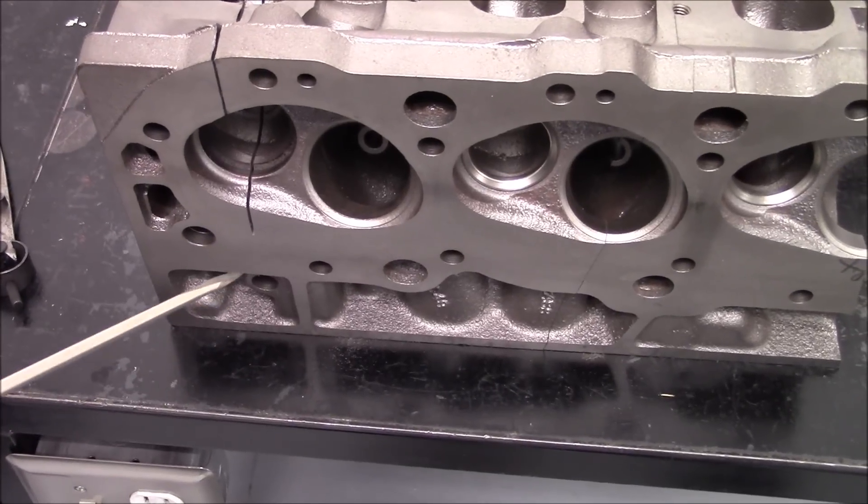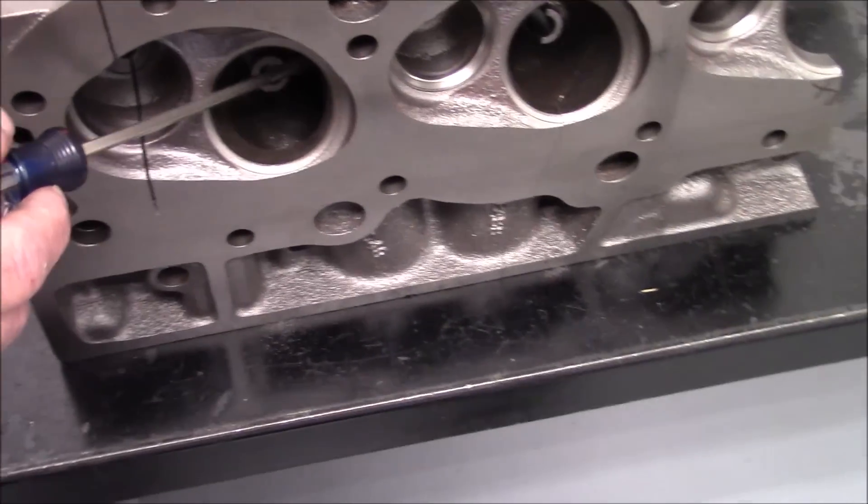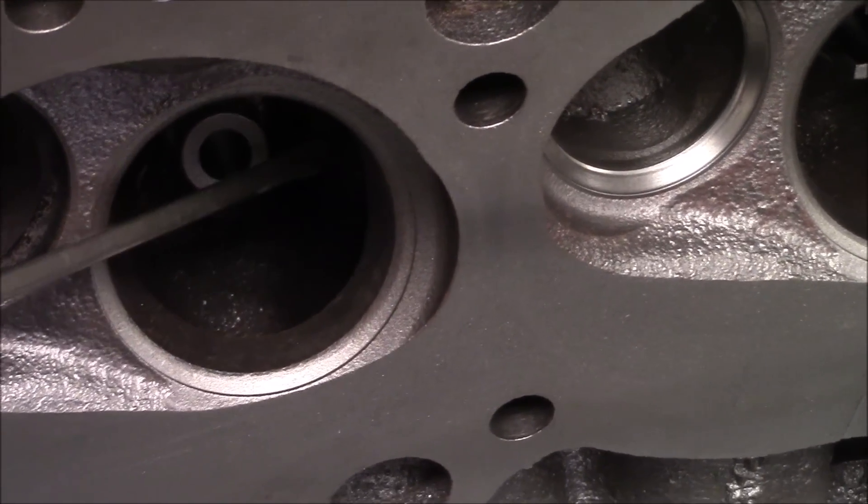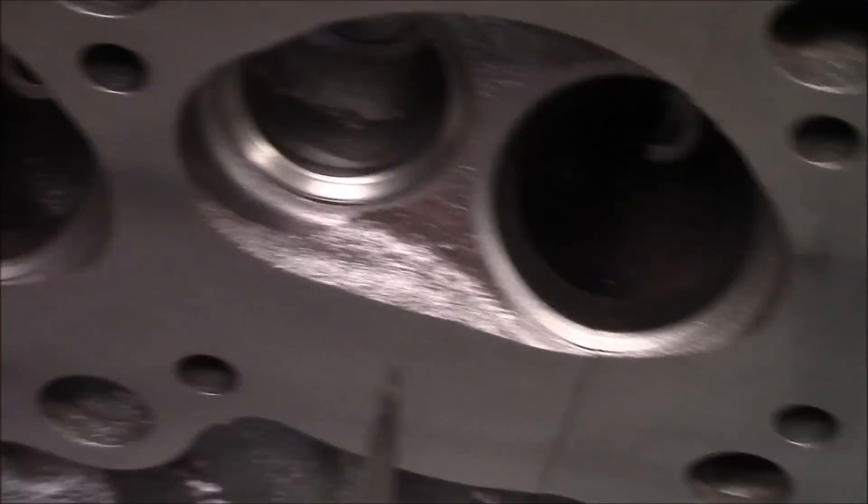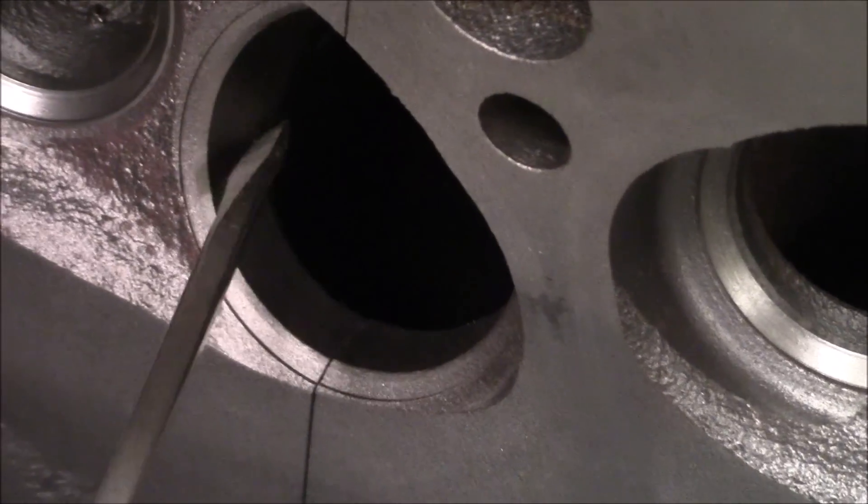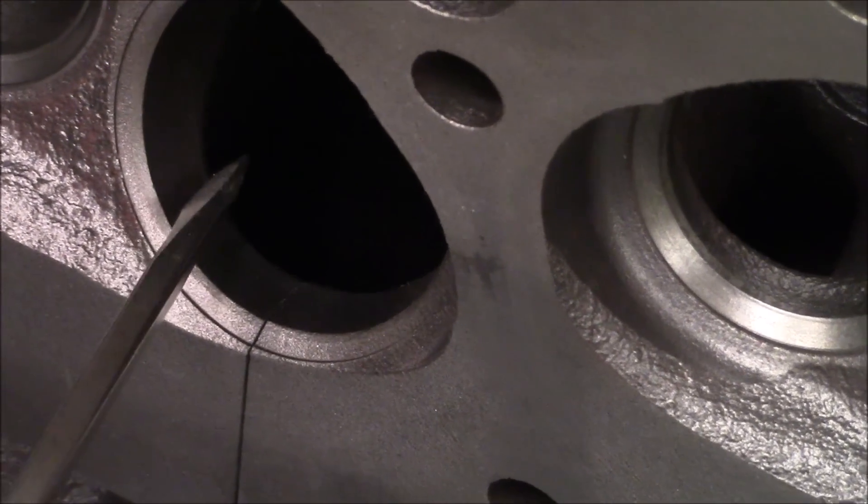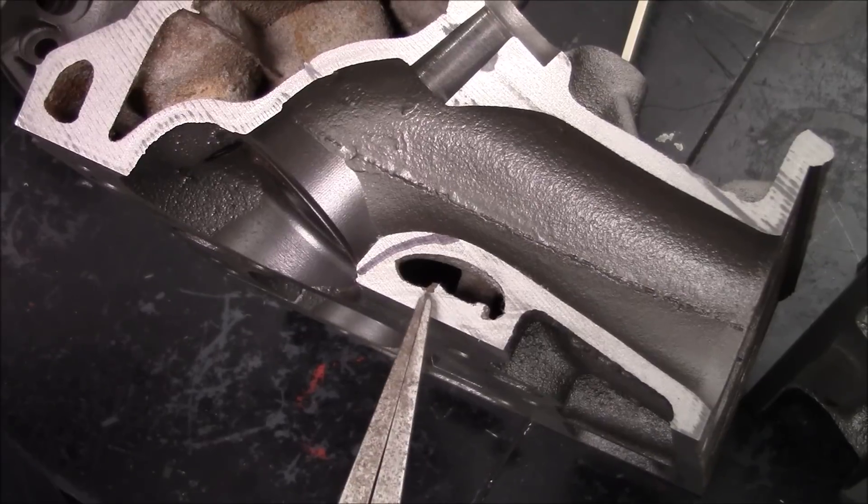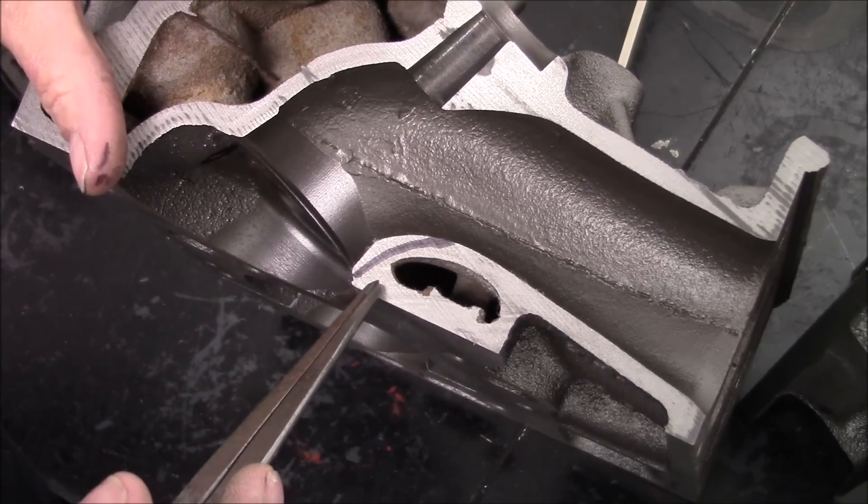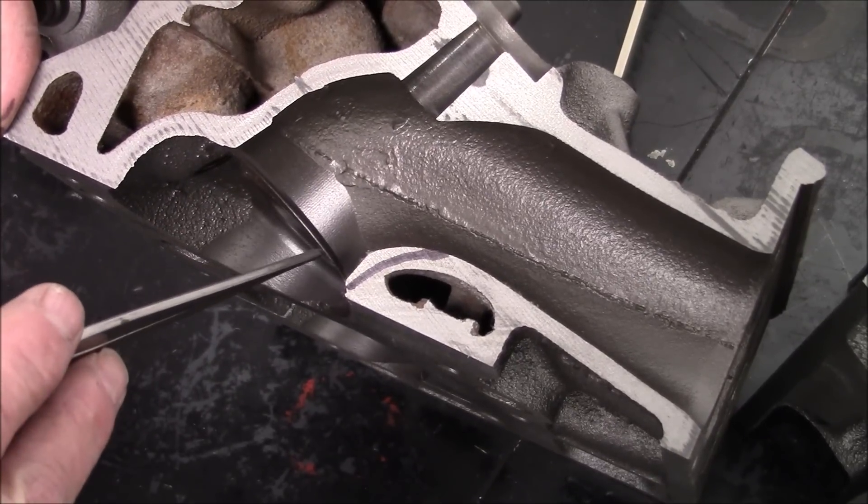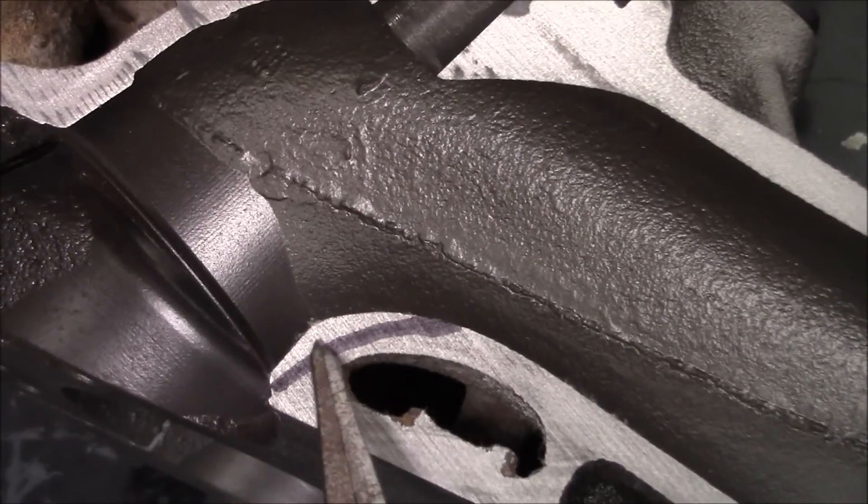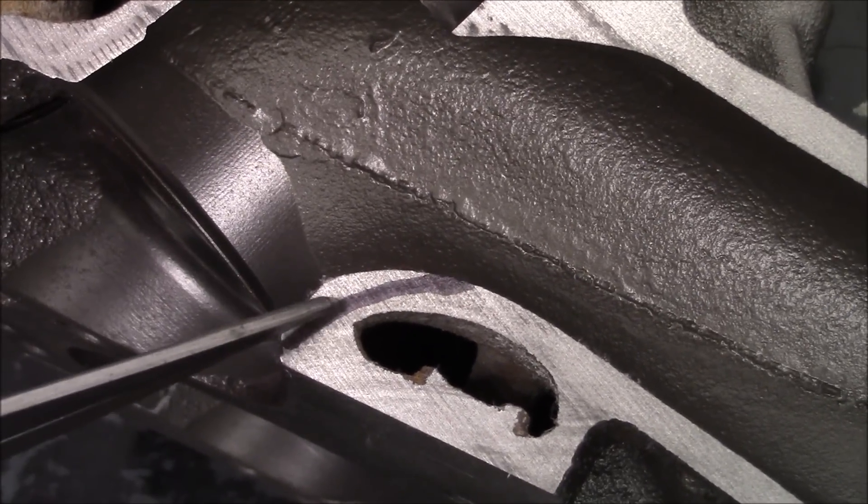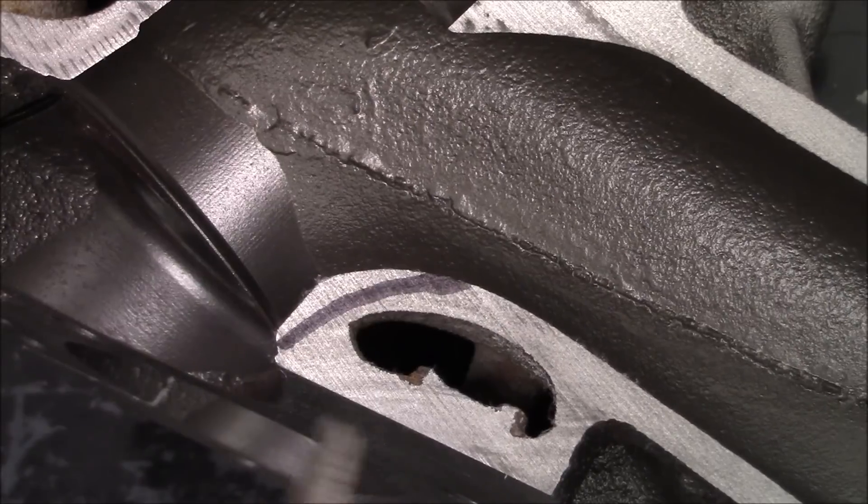Now, where these heads get thin, is right up in here, right in this area, you have to be careful here, and on the bad port, they get thin right in here, as you're widening the floor of the short turn. As you can see, how thin it can get in this area, mainly here.